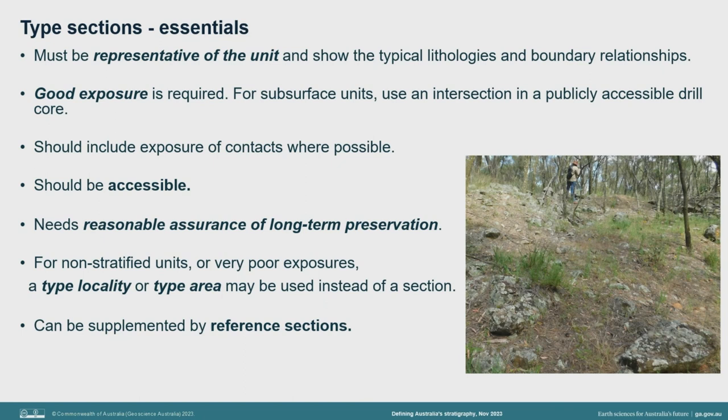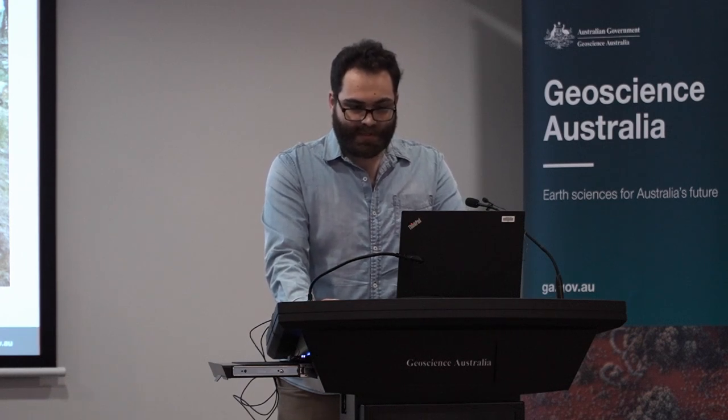Locating and describing a type section or type area or locality is an essential part of the definition of a lithostratigraphic unit. Without it, others may not be sure what the unit includes and excludes. A properly set up type section is also very useful for geologists new to the stratigraphy of an area. There is no point in having a type section that no one can look at — it must be generally accessible. Where possible, type sections are set up in areas of well-exposed outcrop, but if they are defined from drill core, the core must be held in a place where any geologist can arrange to come and inspect it. Don't specify a type section in prohibited areas such as a closed Aboriginal sacred site, or in physically inaccessible areas such as halfway up a sheer cliff.